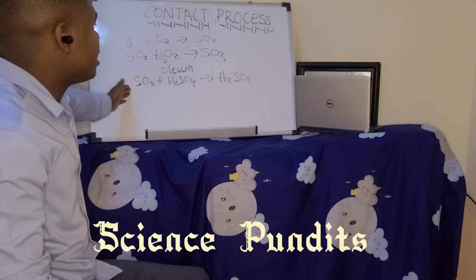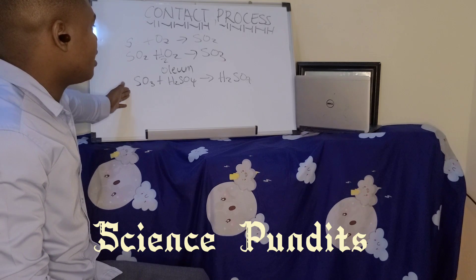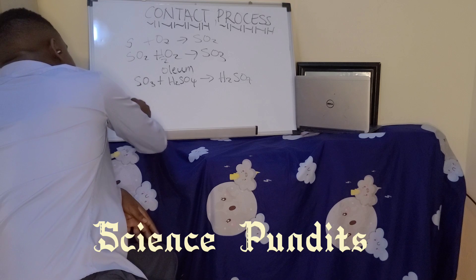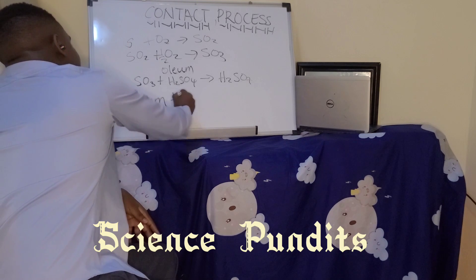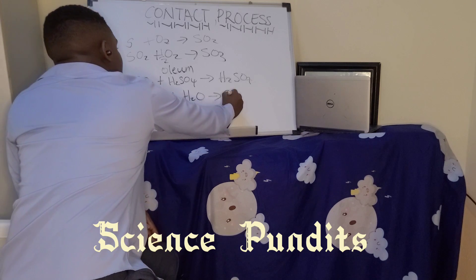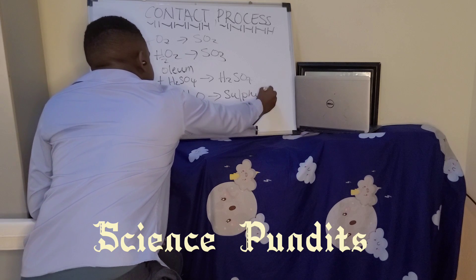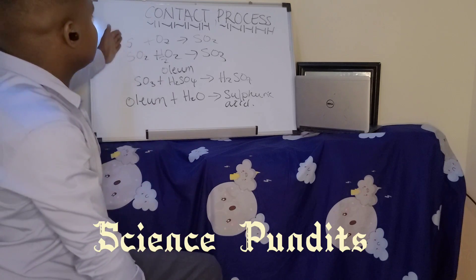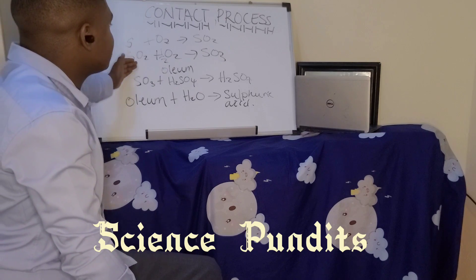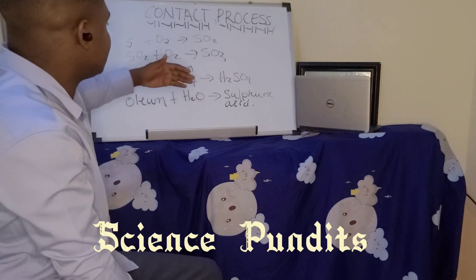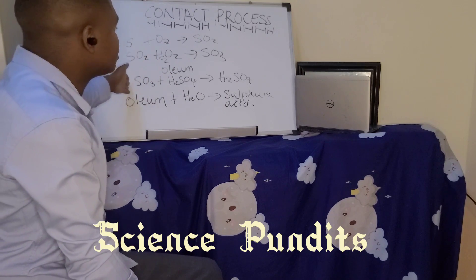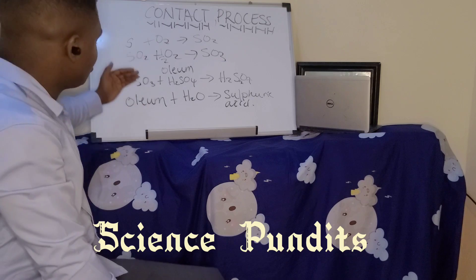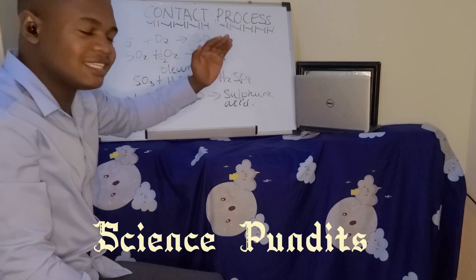After making oleum, you must carry out what is called the dilution stage. In the dilution stage, you simply mix oleum plus water to get your sulfuric acid. So in summary: stage one is sulfur plus oxygen to get sulfur dioxide; stage two is sulfur dioxide plus oxygen to get sulfur trioxide; stage three is sulfur trioxide plus sulfuric acid to get oleum; and the final stage is oleum plus water to get sulfuric acid.